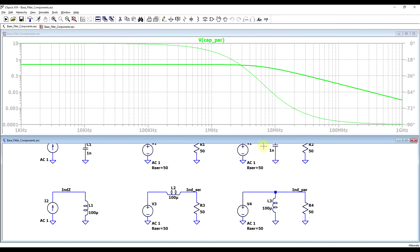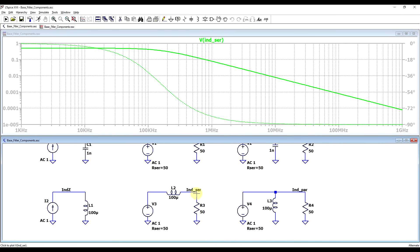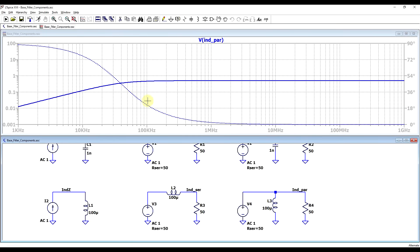If we now swap out the capacitor with an inductor, we will see the same behaviors but inverted. The impedance is rising with a plus 90 degree of phase shift, series circuit presents a low-pass behavior, and the parallel circuit presents a high-pass behavior.